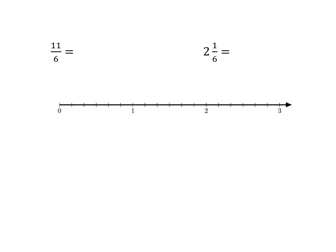Let's check that you managed to get that. Starting with eleven-sixths — our number line has been divided up into sixths, so that makes it easy. There are six sixths up to one, and then we need seven, eight, nine, ten, eleven. So eleven-sixths sits over here on our number line. To convert it to a mixed number: six goes into eleven once with five left over, so it's one and five-sixths.